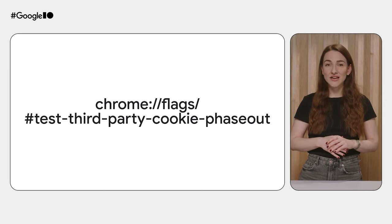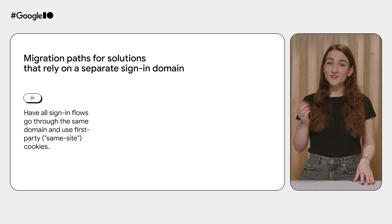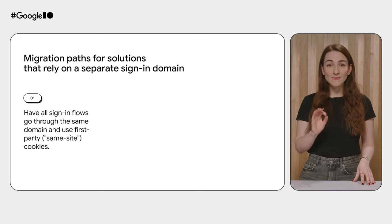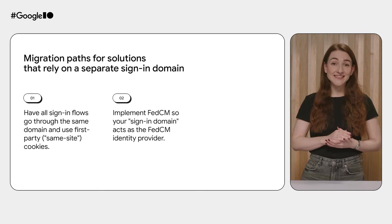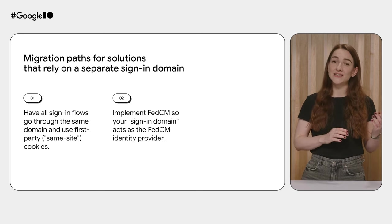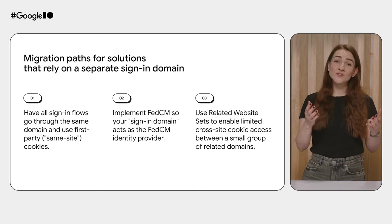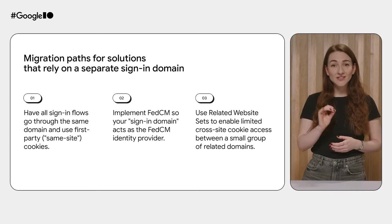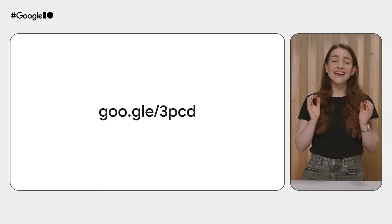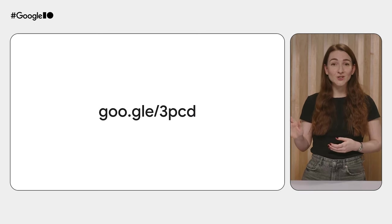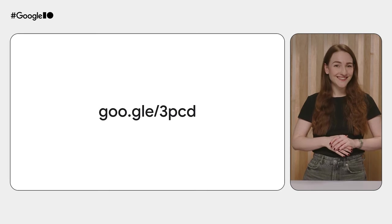If you have your own solution that relies on a separate sign-in domain, there are a few possible migration paths: changing your infrastructure to have all sign-in flows go through the same domain and use first-party or same-site cookies; implementing FedCM so your sign-in domain could act as the FedCM identity provider and be used to authenticate users across your other domains; or using related website sets to enable limited cross-site cookie access between a small group of related domains. We have compiled everything you need to know to transition away from third-party cookies at the 3PCD link on screen, also in the description.